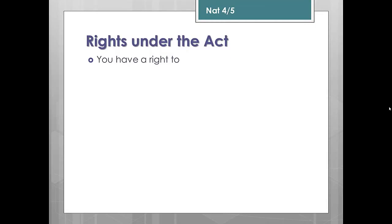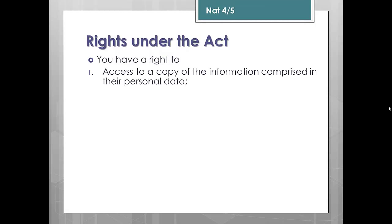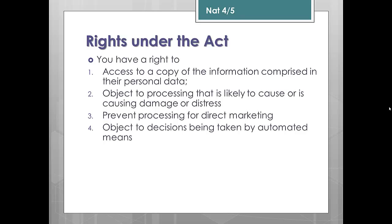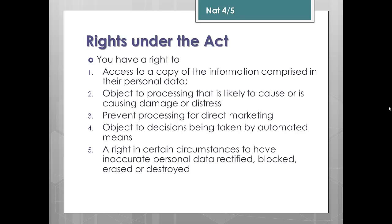You have rights under the Act. You have a right to access a copy of the information comprised in your personal data. You have a right to object or complain about data that's causing damage — for example, if your credit file is wrong, that can cause you serious issues, in which case you have a right to complain. You can prevent processing for direct marketing, and you can object to decisions being taken by automated means. You also have a right, in certain circumstances, to have inaccurate personal data rectified, blocked, erased or destroyed.